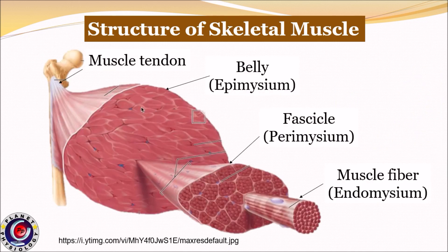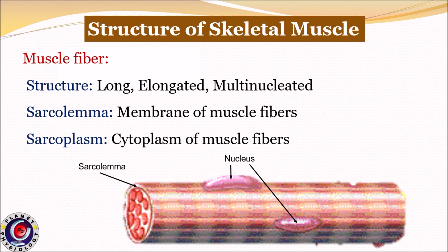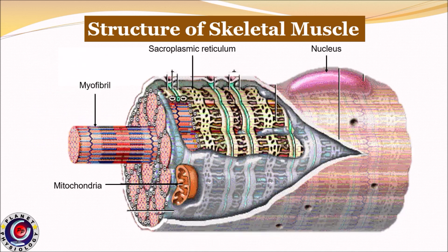Let us quickly revise the organization of muscle. The basic unit of muscle is muscle fiber. Many fibers are grouped together to form a fascicle, and many such fascicles form muscle proper. Now let us study the structure of muscle fiber. As we have seen, muscle fiber is a long, cylindrical, and multinucleated cell.